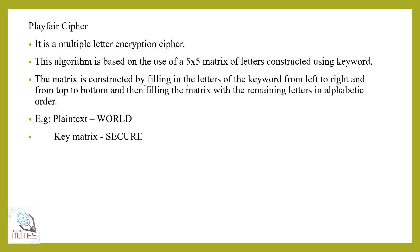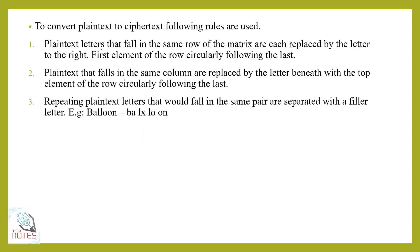To summarize the rules: plain text letters that fall in the same row of the matrix are each replaced by the letter to the right, circularly wrapping. Letters in the same column are replaced by the letter beneath, circularly. Letters forming a rectangle are replaced by the corner letters. Repeated plain text letters that would fall in the same pair are separated with a filler letter X.